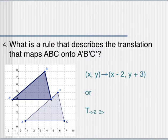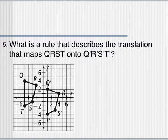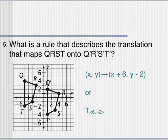Pause here and try question 5 on your own. So for question 5, check your answer. Make sure you write it in both forms so you get comfortable with both versions. So if you compare two points, say q and q prime, q slid 6 units right and 2 down. So x plus 6 and y minus 2. Or t, which stands for translation, 6 comma negative 2.